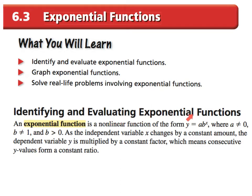Identifying and evaluating an exponential function. An exponential function is a non-linear function — that means it does not form a line. It must be in this form: y equals a times b to the x power, where a cannot be zero, because if a was zero, you would just have a straight line. Now, b cannot be one. The reason why b cannot be one is because if b was one, one to any power would still give you one. Therefore, this would just turn into a number times one, which will also be a line.